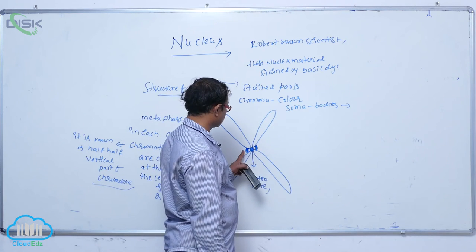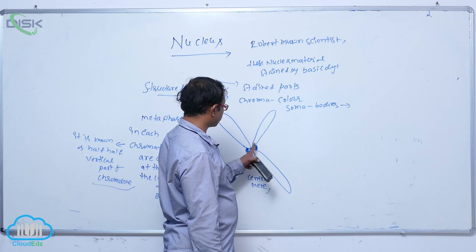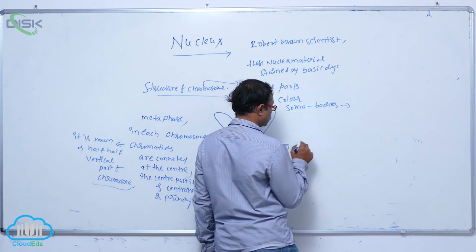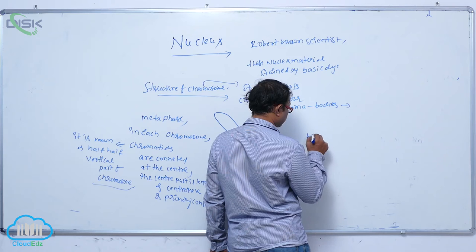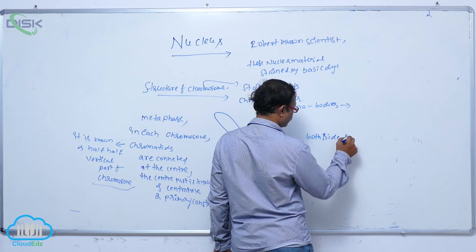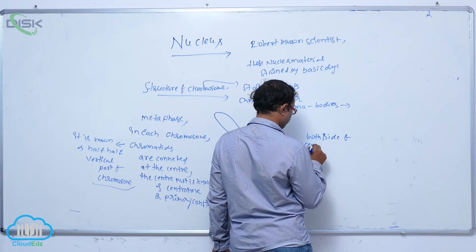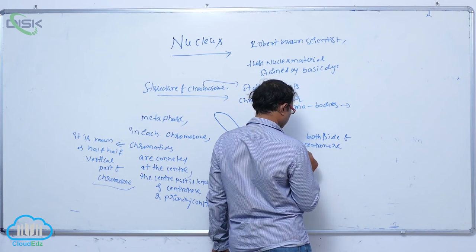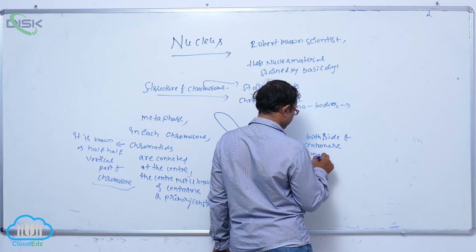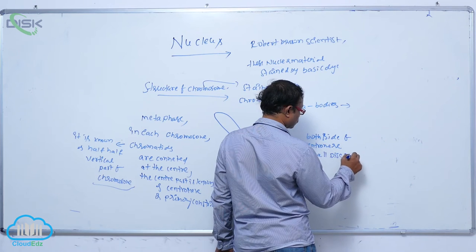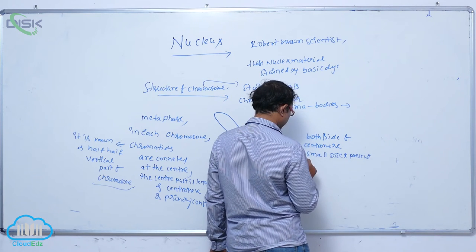At the centromere, on both sides, there are disc-shaped structures. These two small discs present on both sides of the centromere are known as the kinetochore.